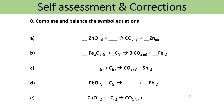Now let's try to balance these symbol equations. For A: 2ZnO + C → CO2 + 2Zn. For the next one: 2Fe2O3 + 3C → 3CO2 + 4Fe. For tin, the formula of tin oxide is SnO2, and the equation balances accordingly. For lead: 2PbO + C → CO2 + 2Pb. Finally for copper oxide: 2CuO + C → CO2 + 2Cu.